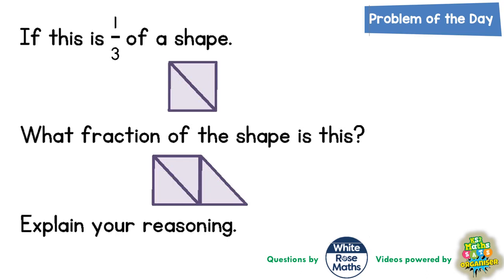Well, if it's one third of the shape, we would have to multiply that by three to get the whole shape. So if you times the one third by three, you get the whole shape.